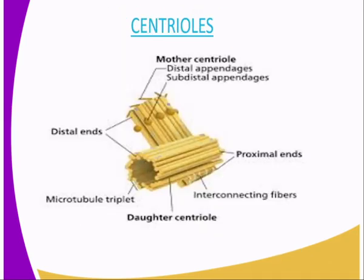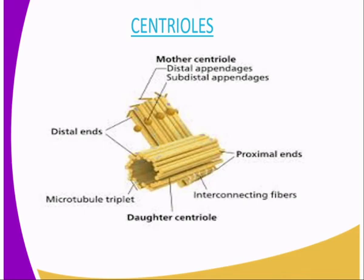We are going to have our fourth organelle, which are the centrioles. As we are able to see, we have the mother centriole and the daughter centriole. On the mother centriole, we have the distal appendages, which are subtended by the subdistal appendages. On the daughter centriole, we have the proximal ends, the interconnecting fibers, and the microtubule triplet. The centrioles are rod-shaped structures located just outside the nuclear membrane. They form spindle fibers during cell division in animal cells, and also form cilia and flagella in cells and organisms where these structures occur.